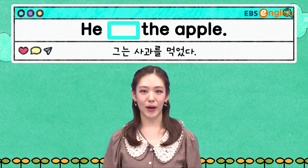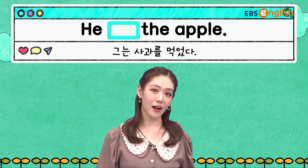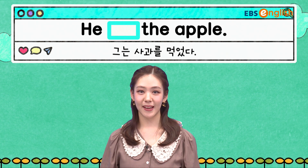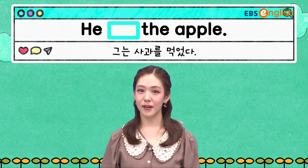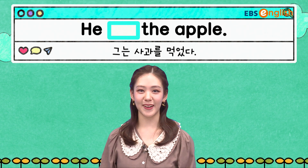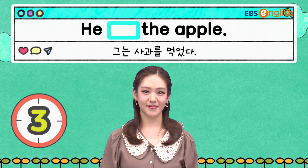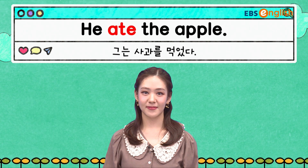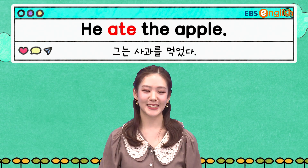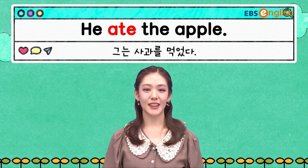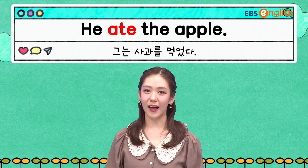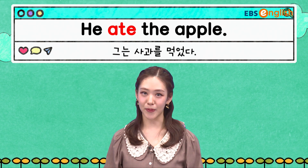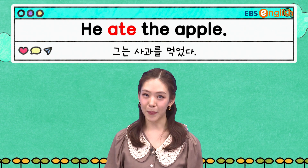그는 사과를 먹었다. 과거형이죠, 아까 먹은 거예요. 그러면 he blank the apple. 이 blank 안에는 뭐가 들어갈까요? 네, 맞습니다. He ate the apple입니다. He ate the apple.